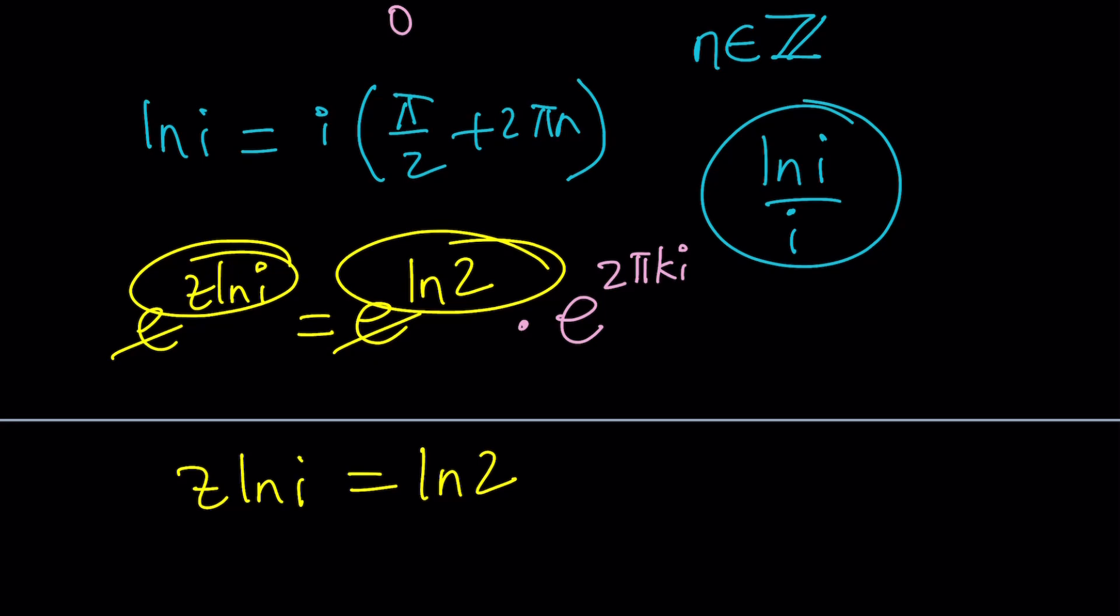Well, we said that e to the power 0 is 1 in the real world. But in the complex world, you can write 1 in infinitely many ways using different arguments. Make sense? Okay.